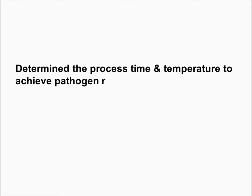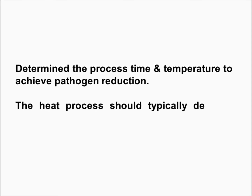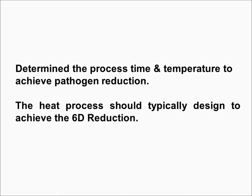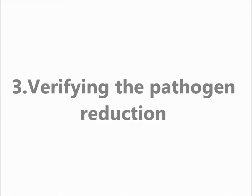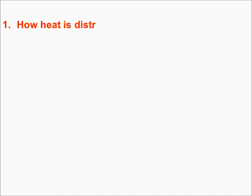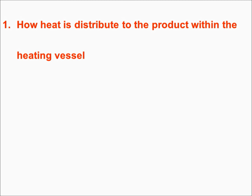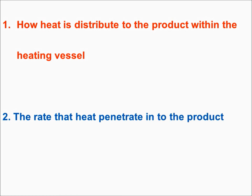The second step is to determine the process time and temperature to achieve pathogen reduction. The heat process should typically be designed to achieve a 6-log reduction. Step 3 is verifying the pathogen reduction. The effectiveness of the heat process depends on three factors: how heat is distributed to the product within the heating vessel, the rate that heat penetrates into the product, and how the target pathogen responds to the heat.